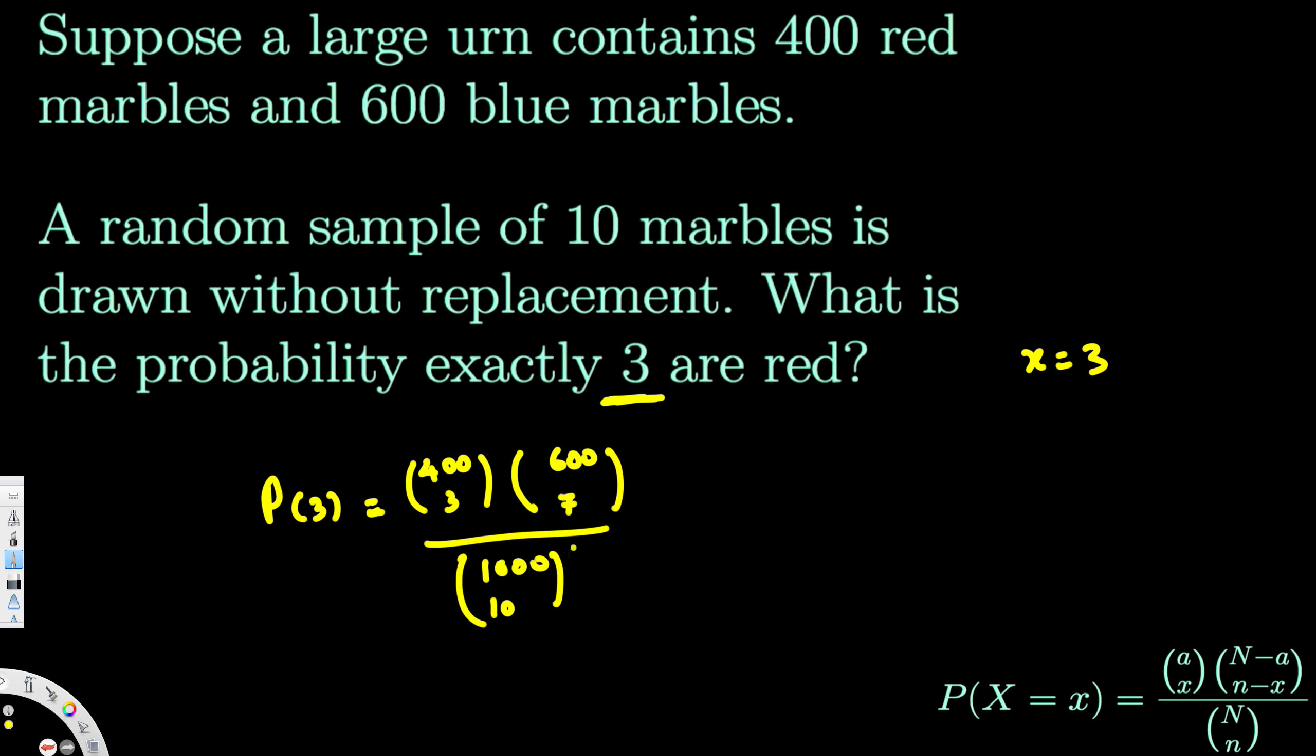And if you use the combination form in your calculator and calculate this, that's going to give you the probability of 0.215. And this is the probability of having exactly 3 red marbles.